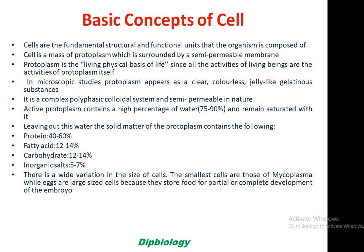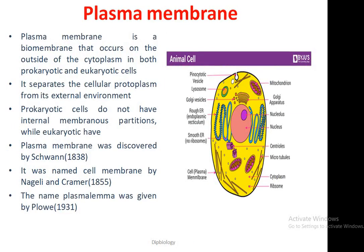There is a wide variation in the size of cells. The smallest cells are those of mycoplasma, while the largest are eggs which store food for partial or complete development of the future embryo. Plasma membrane is a biomembrane that occurs on the outside of the cytoplasm in both prokaryotic and eukaryotic cells. It separates the cellular protoplasm from its external environment and helps in compartmentalization of the cells.